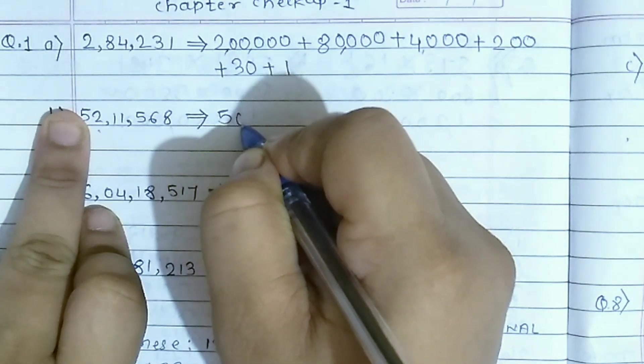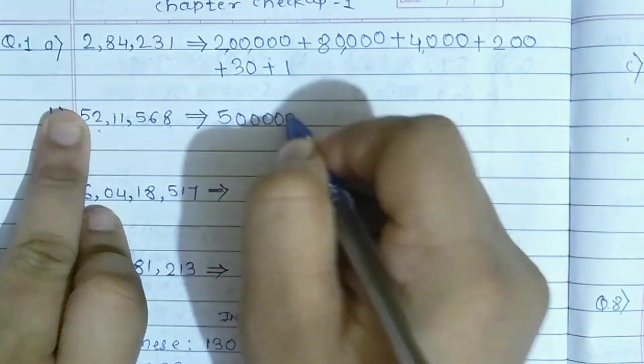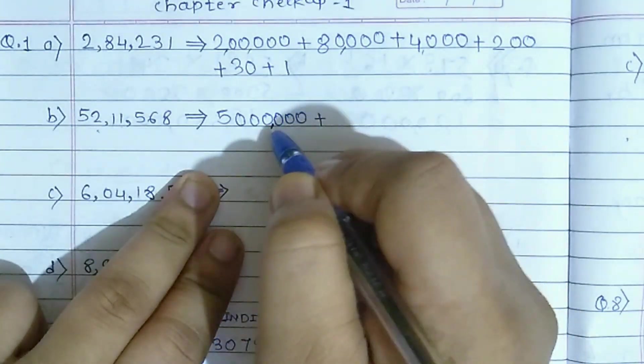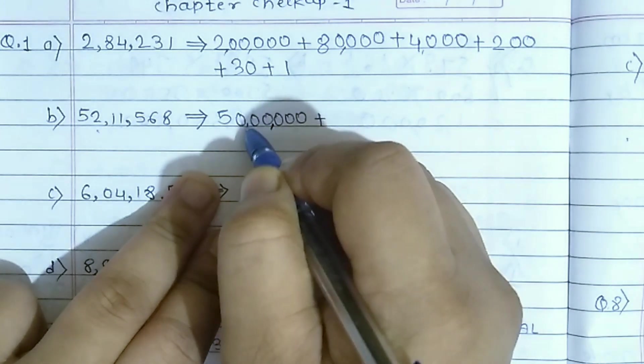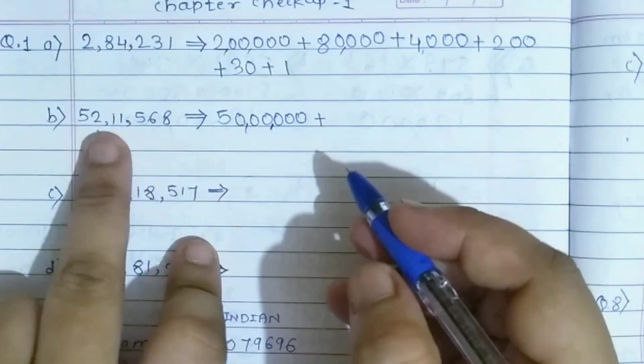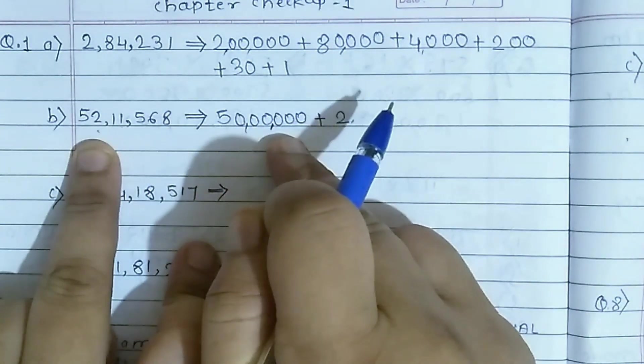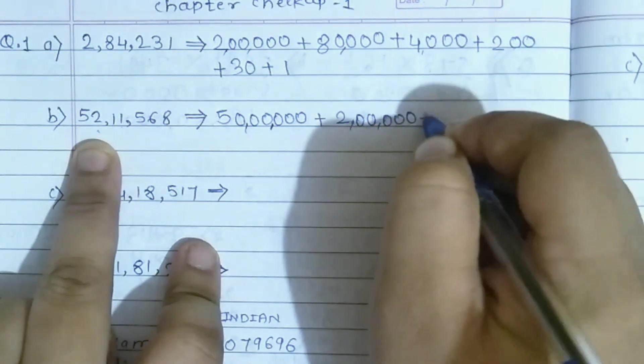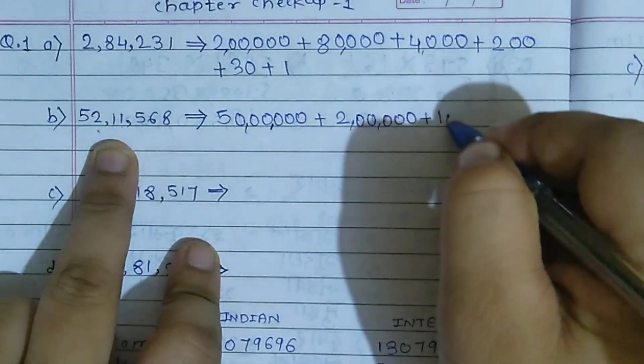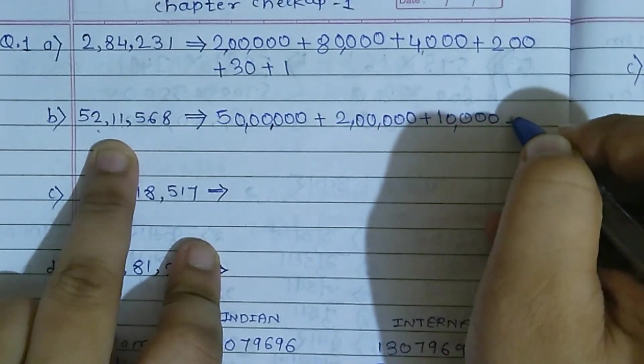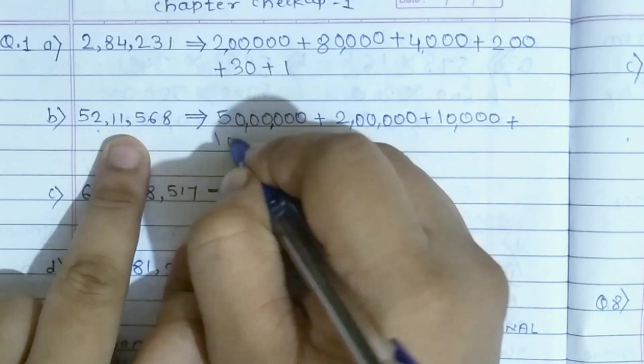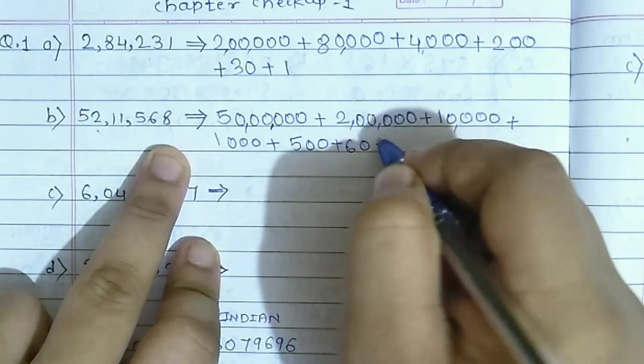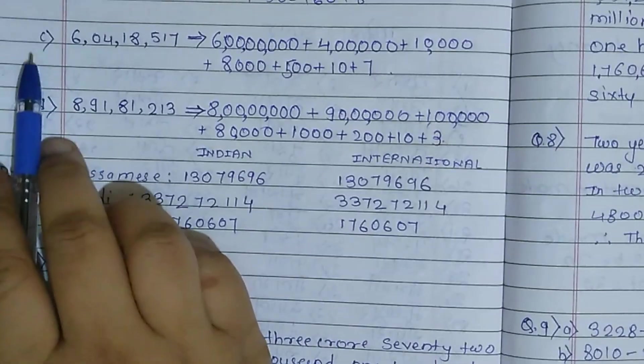See one more example: 5, after 5 there are 1, 2, 3, 4, 5, 6 digits, so put 6 zeros. Plus you can put comma here. In Indian number system we always put comma first 3 digits, then 2, then 2.